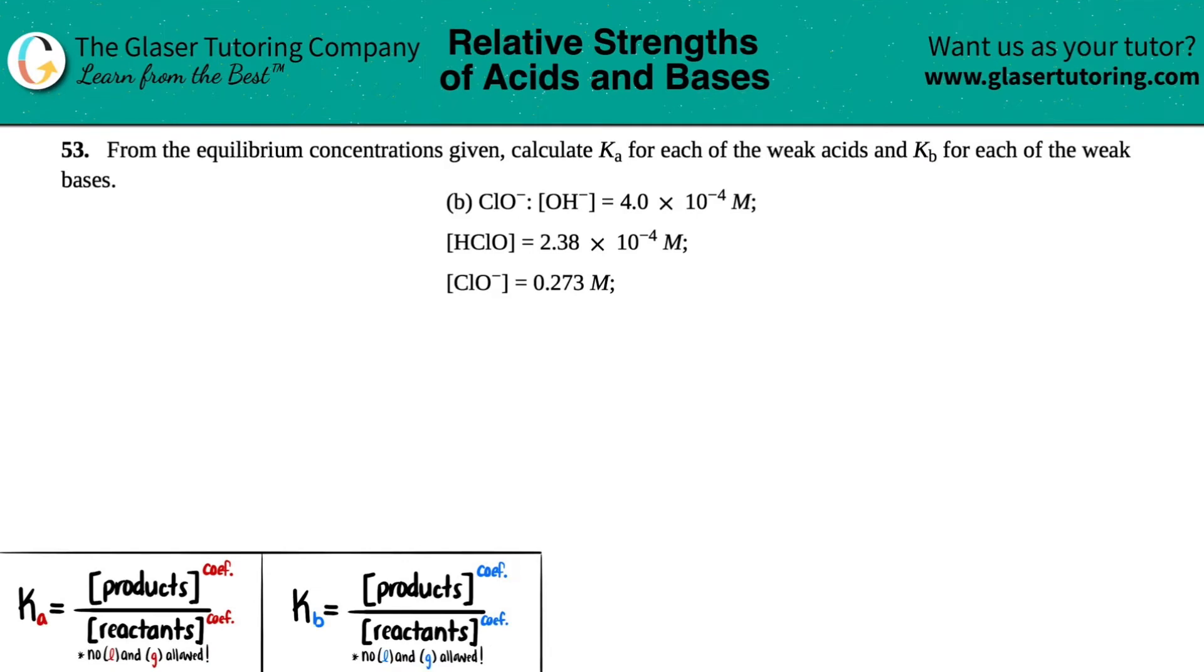Number 53. From the equilibrium concentrations given, calculate the Ka for each of the weak acids and the Kb for each of the weak bases.